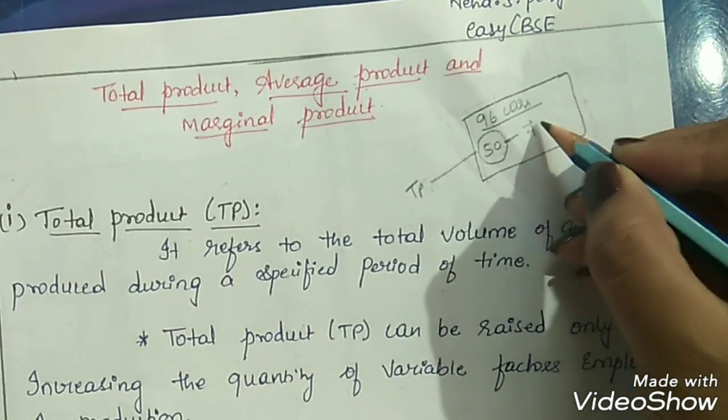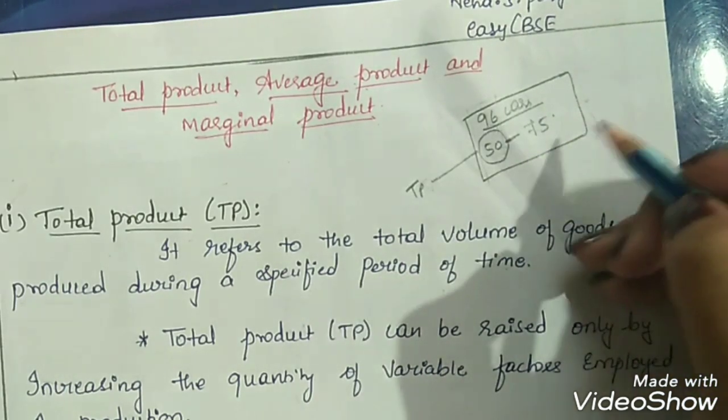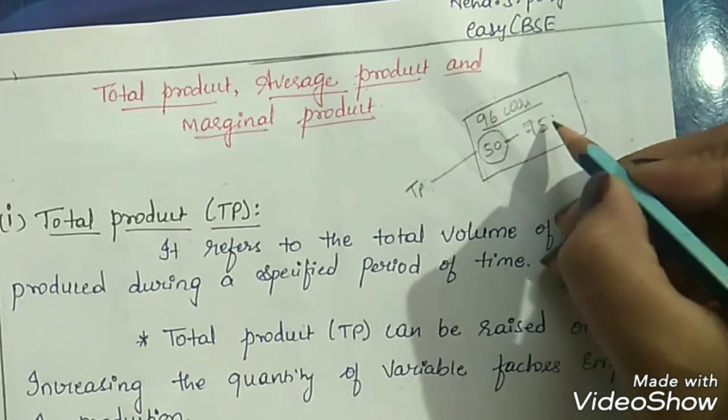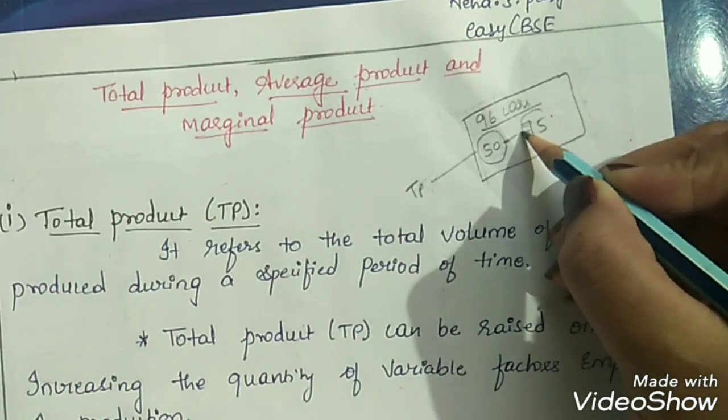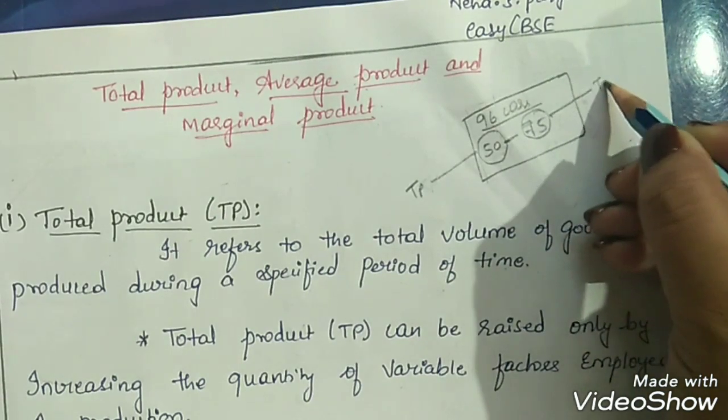Assume that production is increased to 75 units. So our total output now becomes 75.